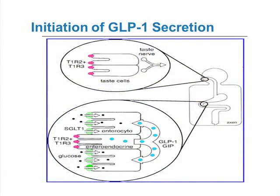GLP-1 has a very significant paracrine effect. It not only turns on the beta cell and turns off the alpha cell, but it also turns on intestinal cells to produce SGLT-1, a glucose transporter that enhances glucose absorption from the gut. So GLP-1 not only produces insulin but ensures more glucose is absorbed.